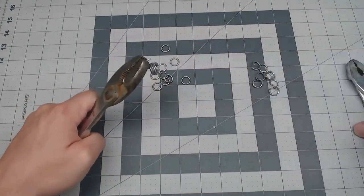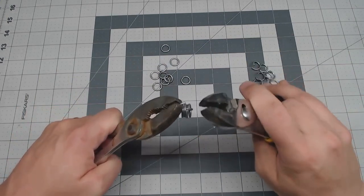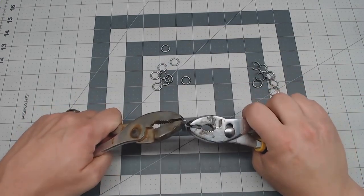Once you have enough of these for your project or at least that session, the first thing to do is to put four closed rings into one open ring. This is why it's four-in-one.